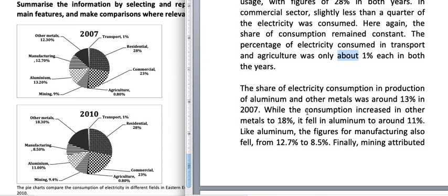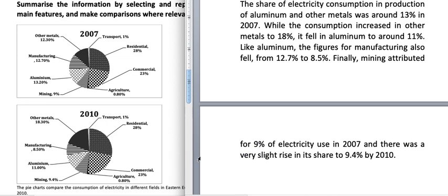The share of electricity consumption in production of aluminium and other metals was around 13 percent in 2007 — you can see 12.3 and 13.2. While the consumption increased in other metals to 18 percent, it fell in aluminium to around 11 percent. Like aluminium, the figures for manufacturing also fell from 12.7 percent to 8.5 percent. Finally, mining accounted for 9 percent of electricity used in 2007, with a very slight rise to 9.4 percent by 2010.